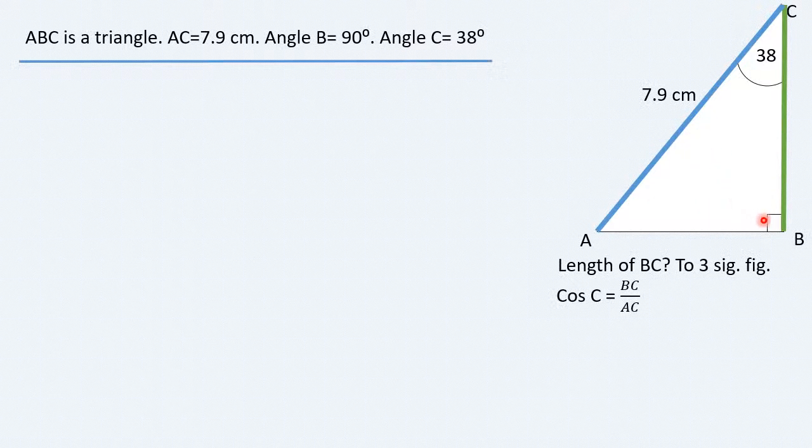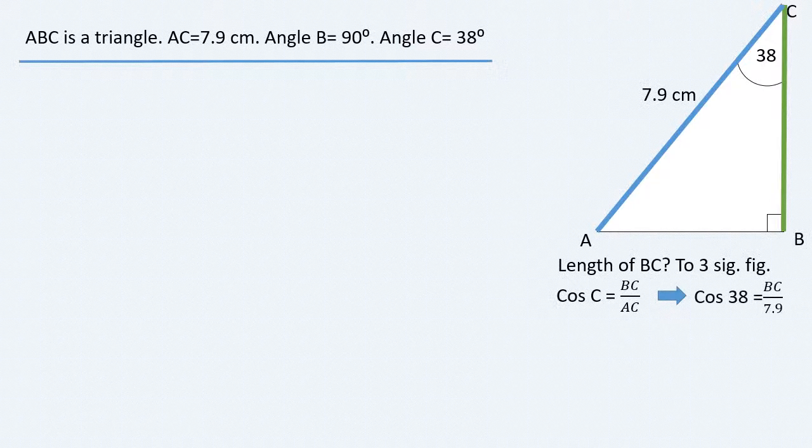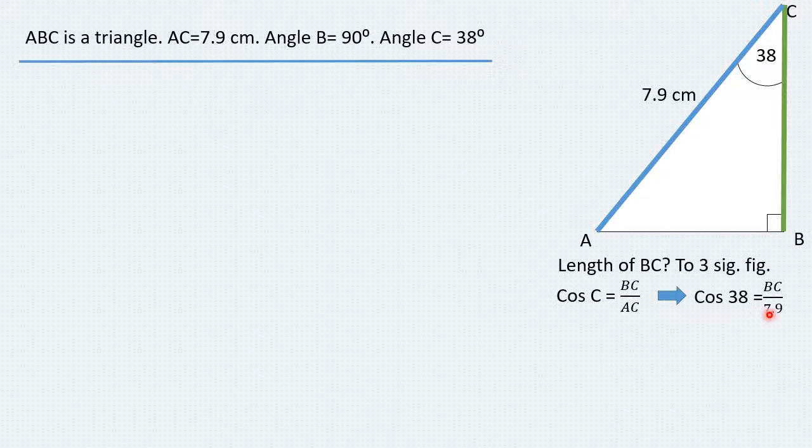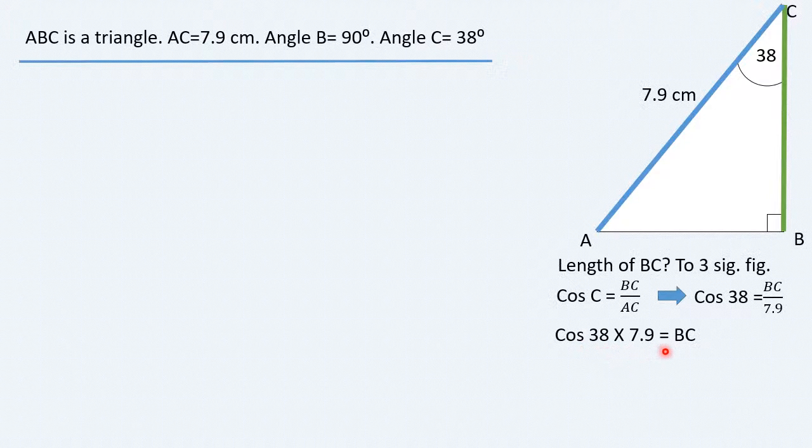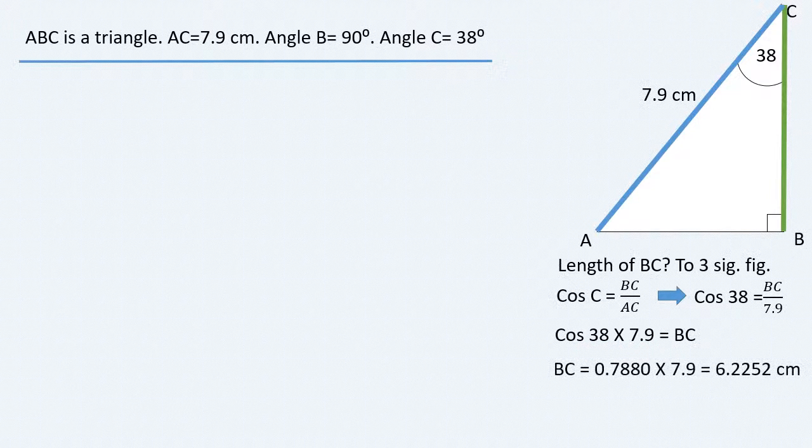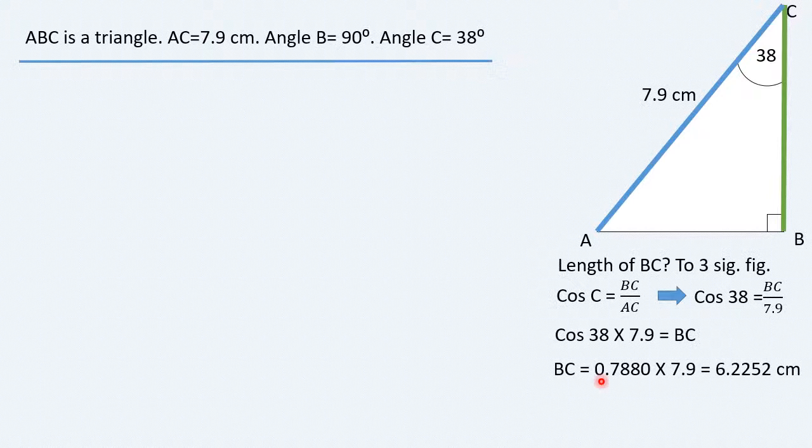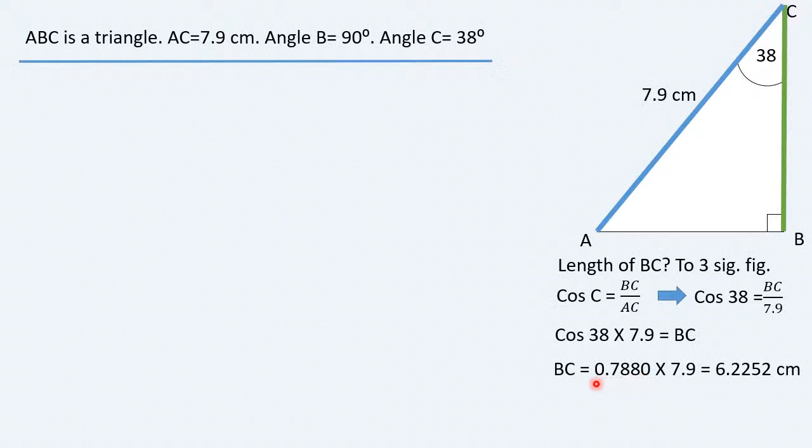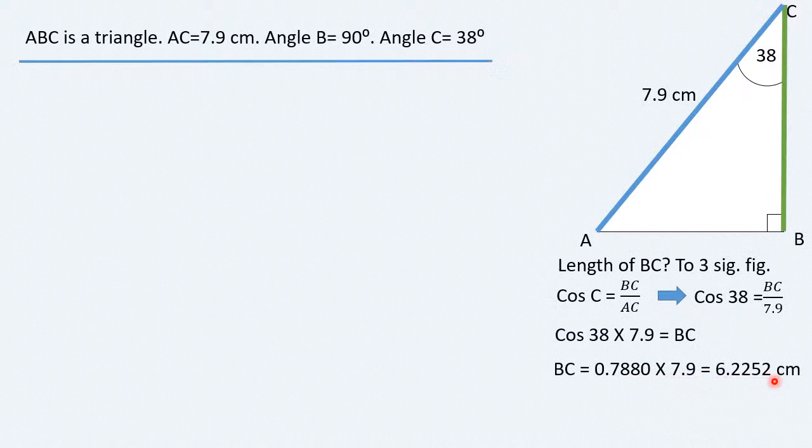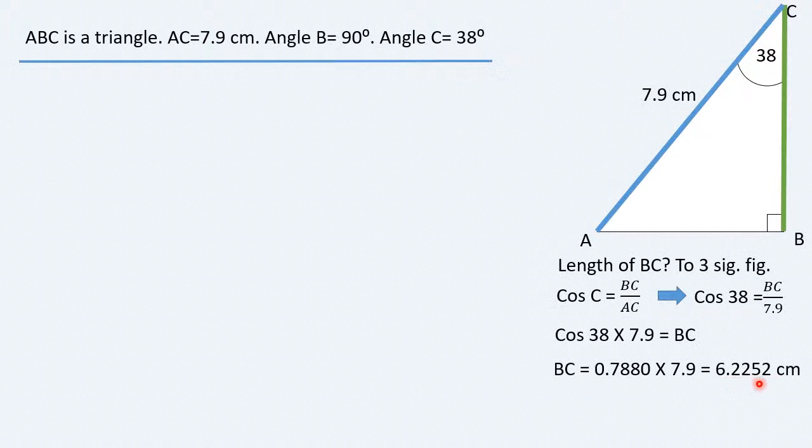If we plug in the numbers, we get cosine 38 equals BC divided by 7.9. Rearranging the equation to make BC the subject of the formula, we get BC equals cosine 38 multiplied by 7.9, and if you work out cosine 38 on your calculator, you will end up with BC equals 0.7880 multiplied by 7.9, which is equal to 6.2252 centimeters, and this is not the right answer,